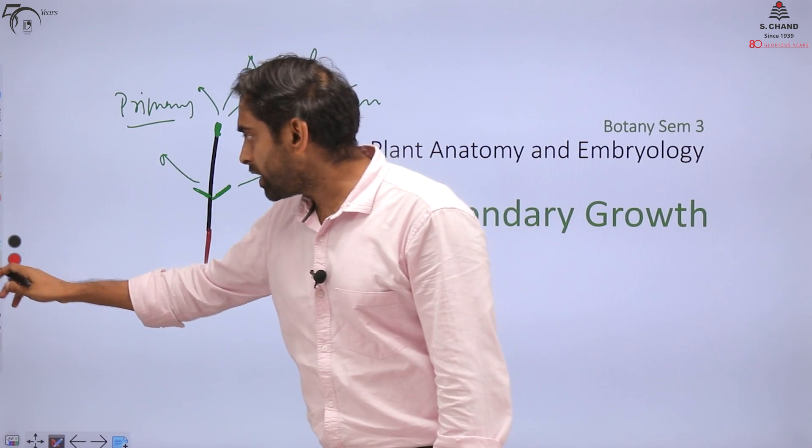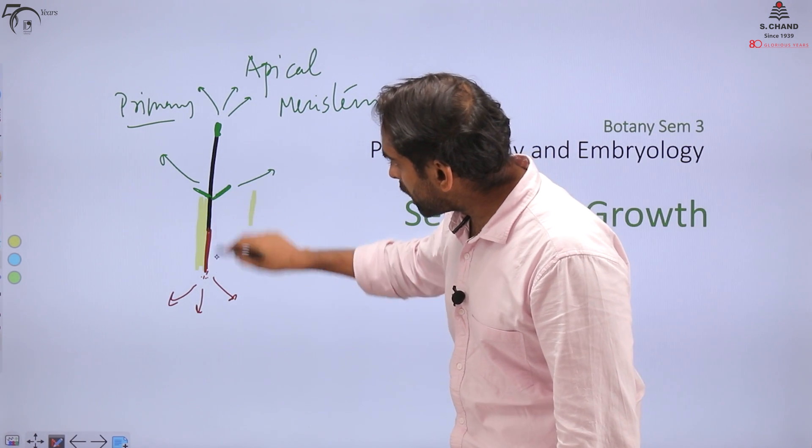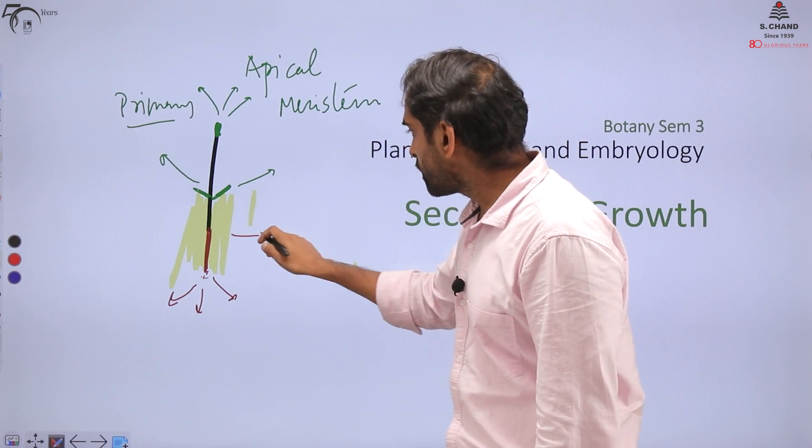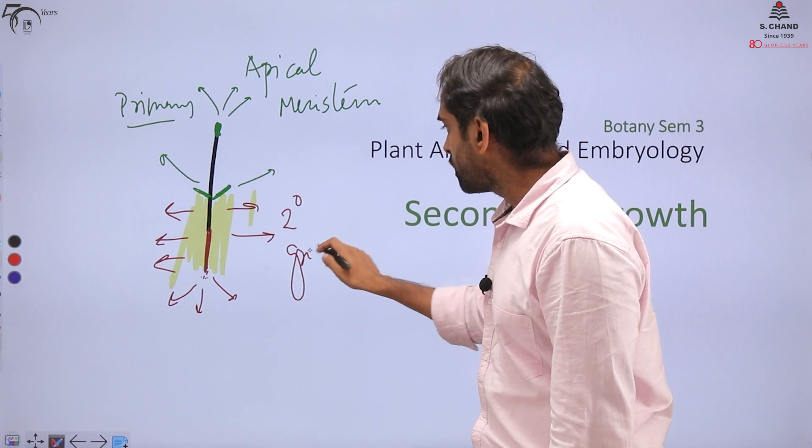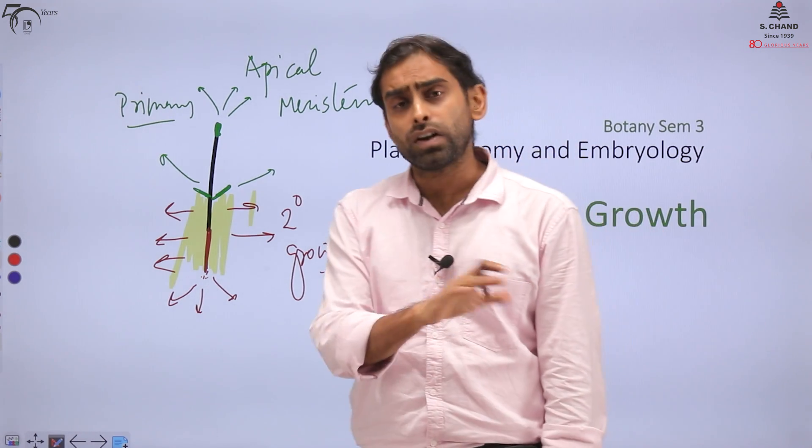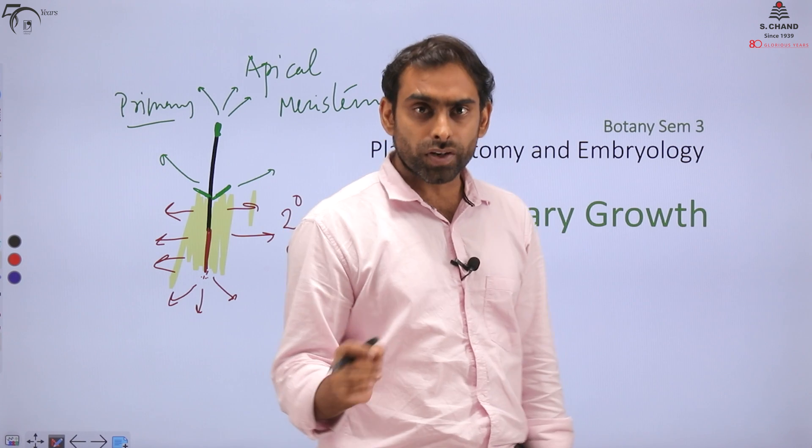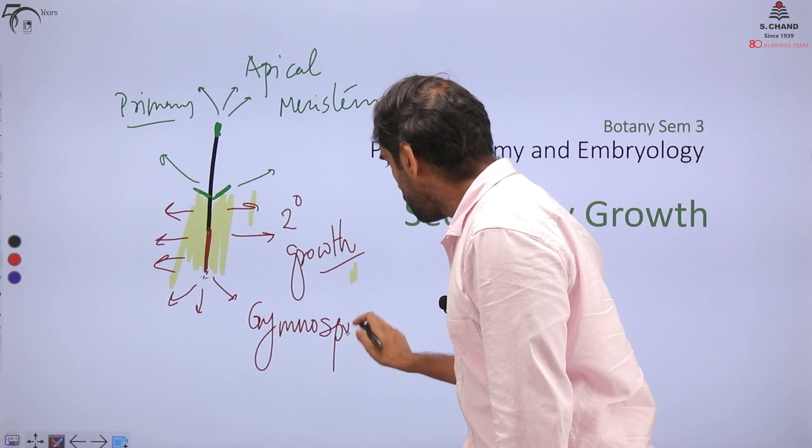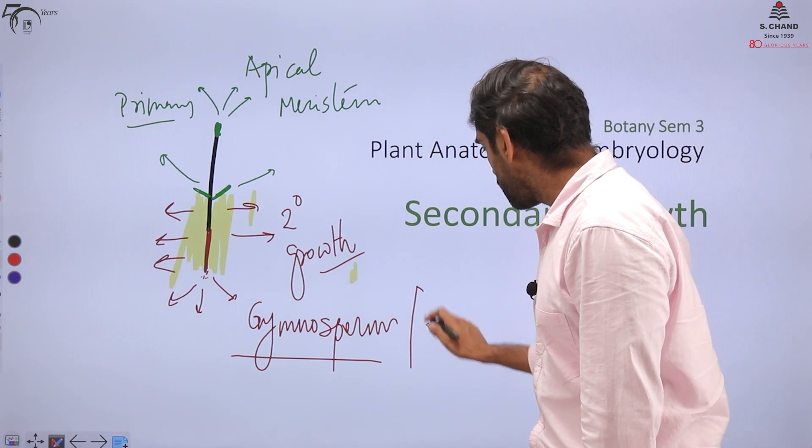On the other hand, if plant increases in diameter, in sideways manner, then this growth in the sideways manner is called secondary growth. So I hope you are now clear about primary and secondary growth. Secondary growth will not happen in all kinds of plants. It is generally restricted to gymnosperms and among angiosperms, it is limited to only dicots. Monocots will not have very prominent examples of secondary growth.